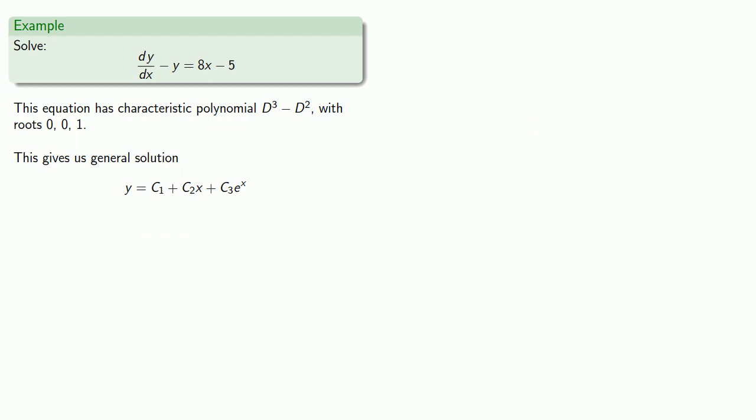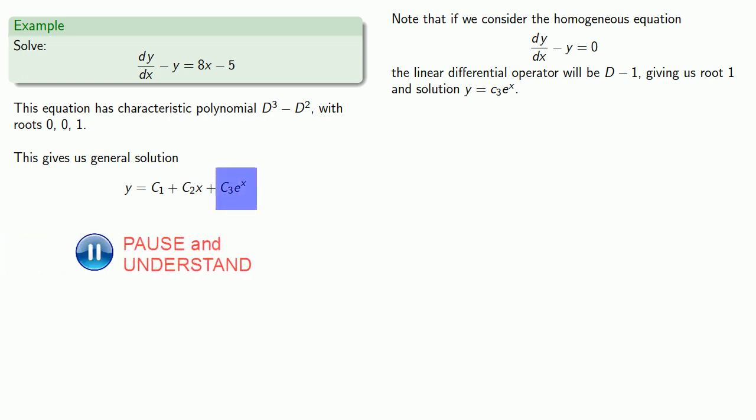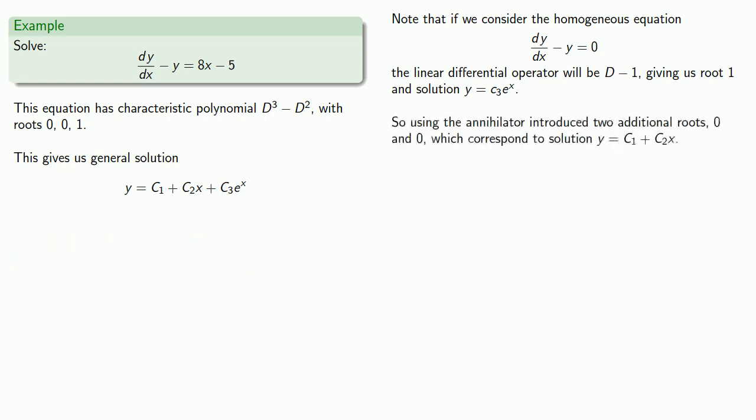Now let's think about this for a moment. Note that if we consider the homogeneous equation dy/dx minus y equals 0, the linear differential operator will be D minus 1, giving us root 1 and solution y equals c_3e^x. And that's this part of our general solution. Using the annihilator introduced two additional roots, 0 and 0, which corresponds to the solution y equals c_1 plus c_2x. That's this part of the general solution.